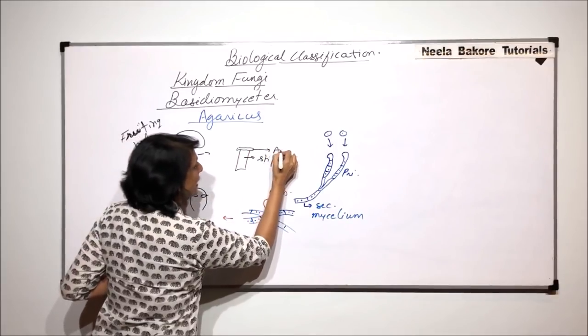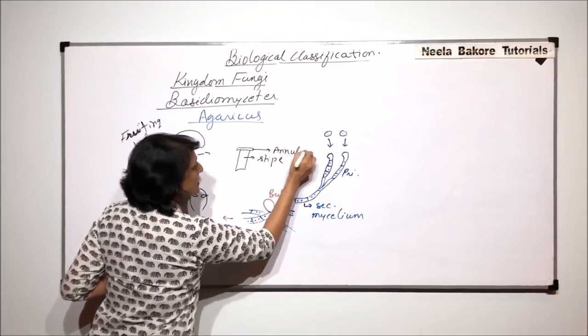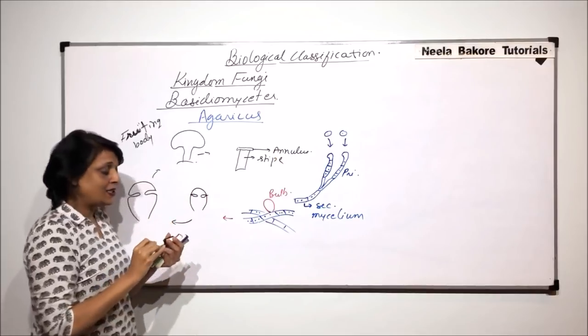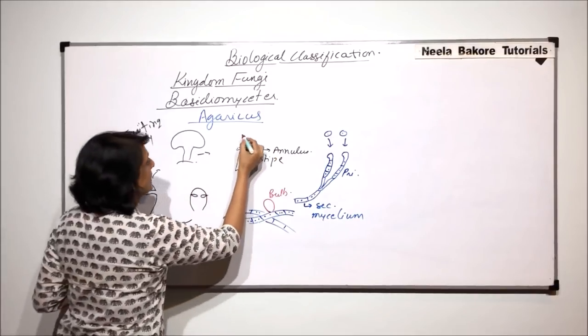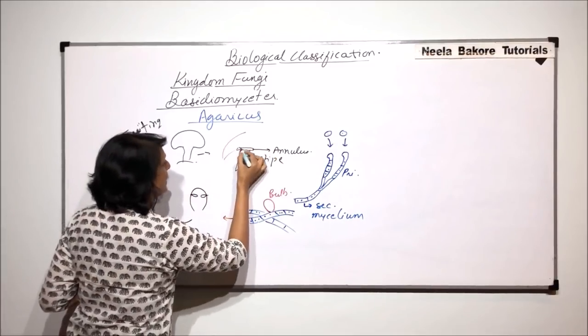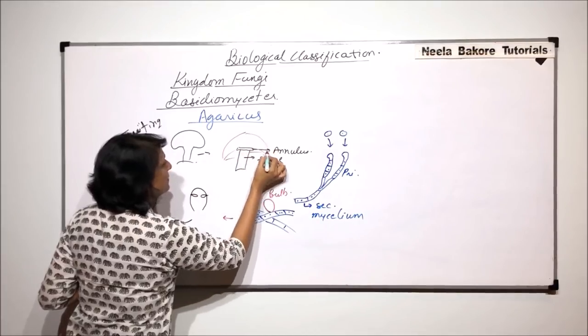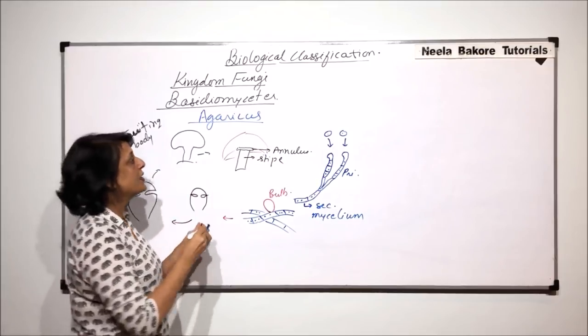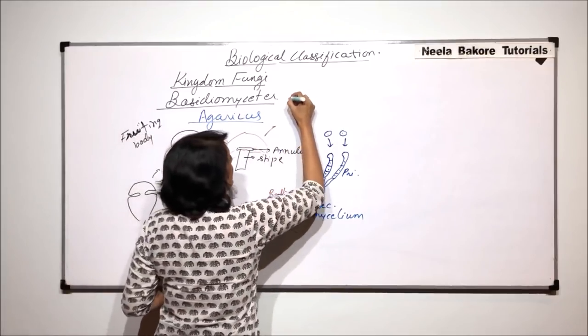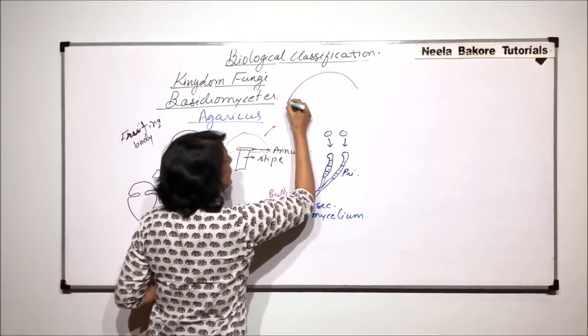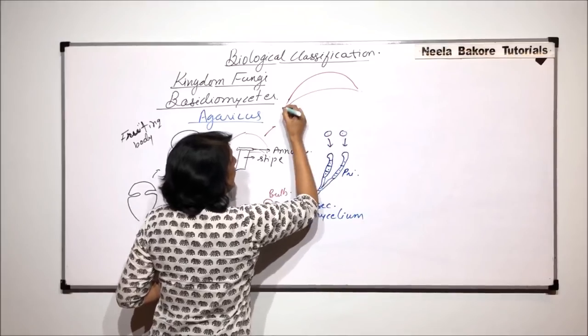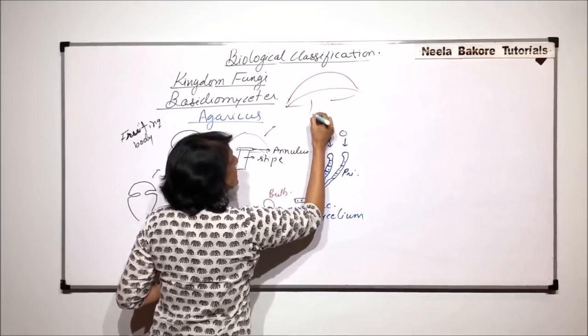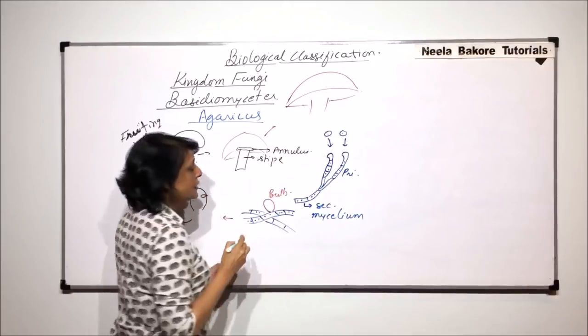This structure is known as the annulus and attached to this is that umbrella-like structure. This is the part which is visible to us. Let us draw this umbrella-like structure and see what exactly is inside. The structure is somewhat like this. And here is this stipe or annulus attached.